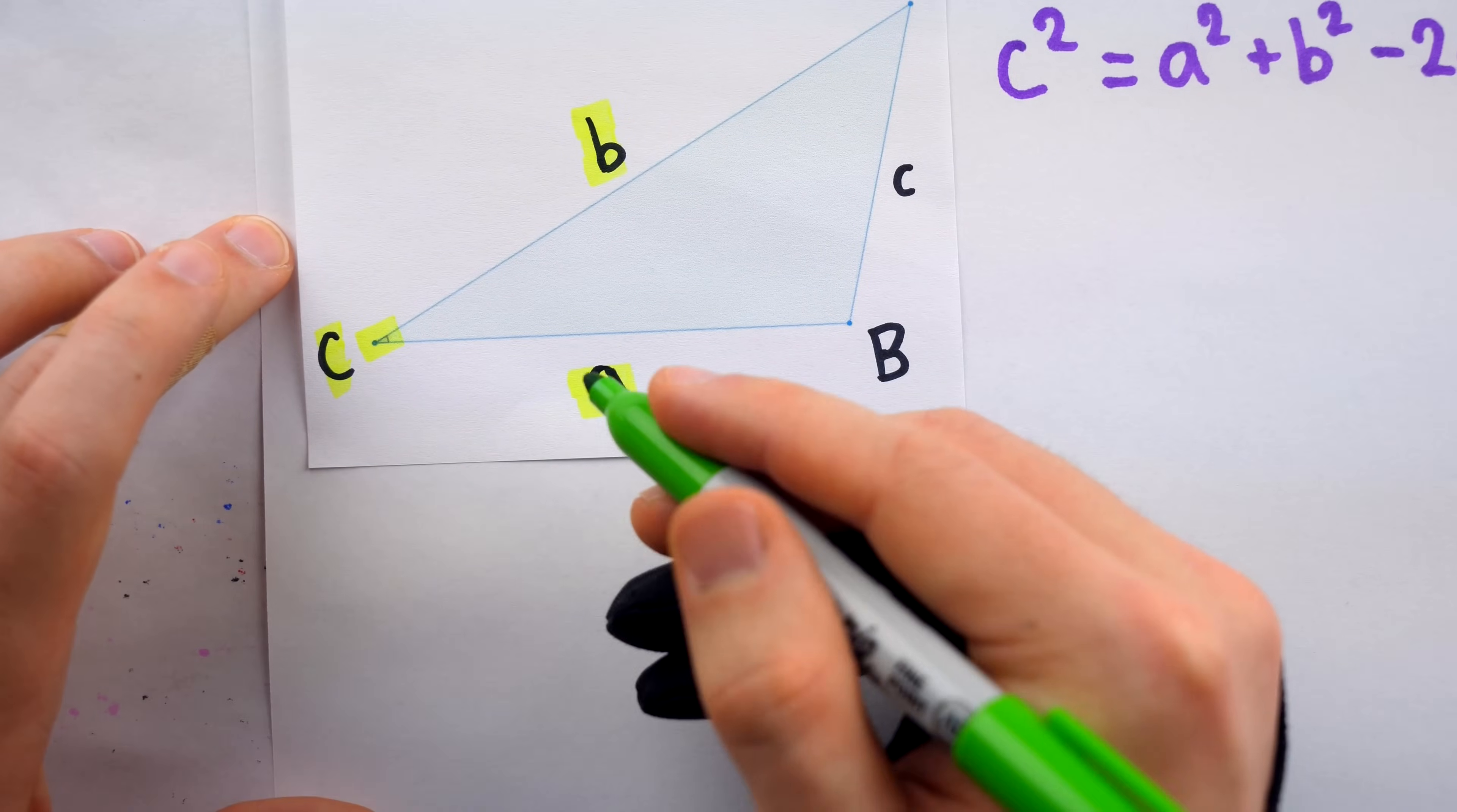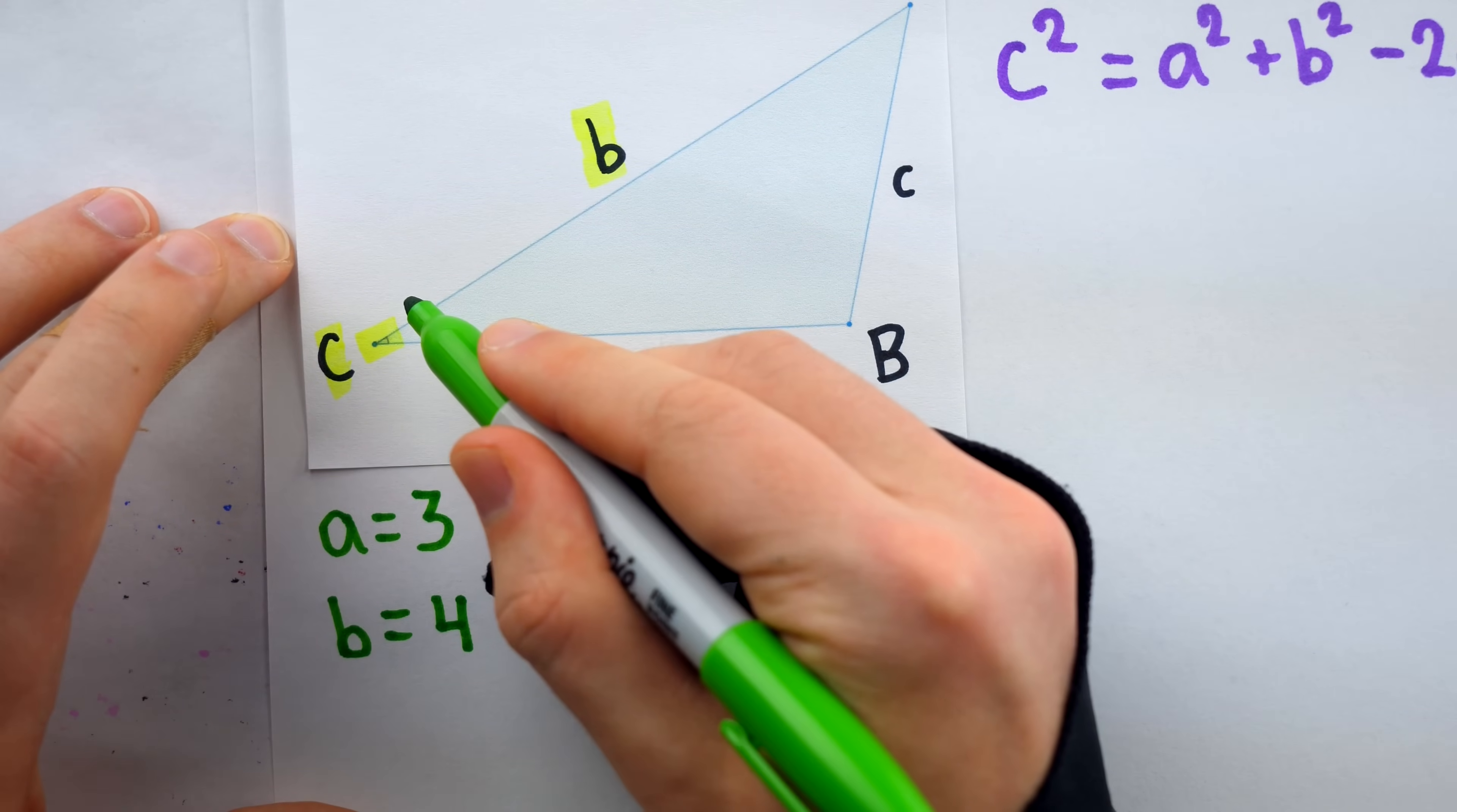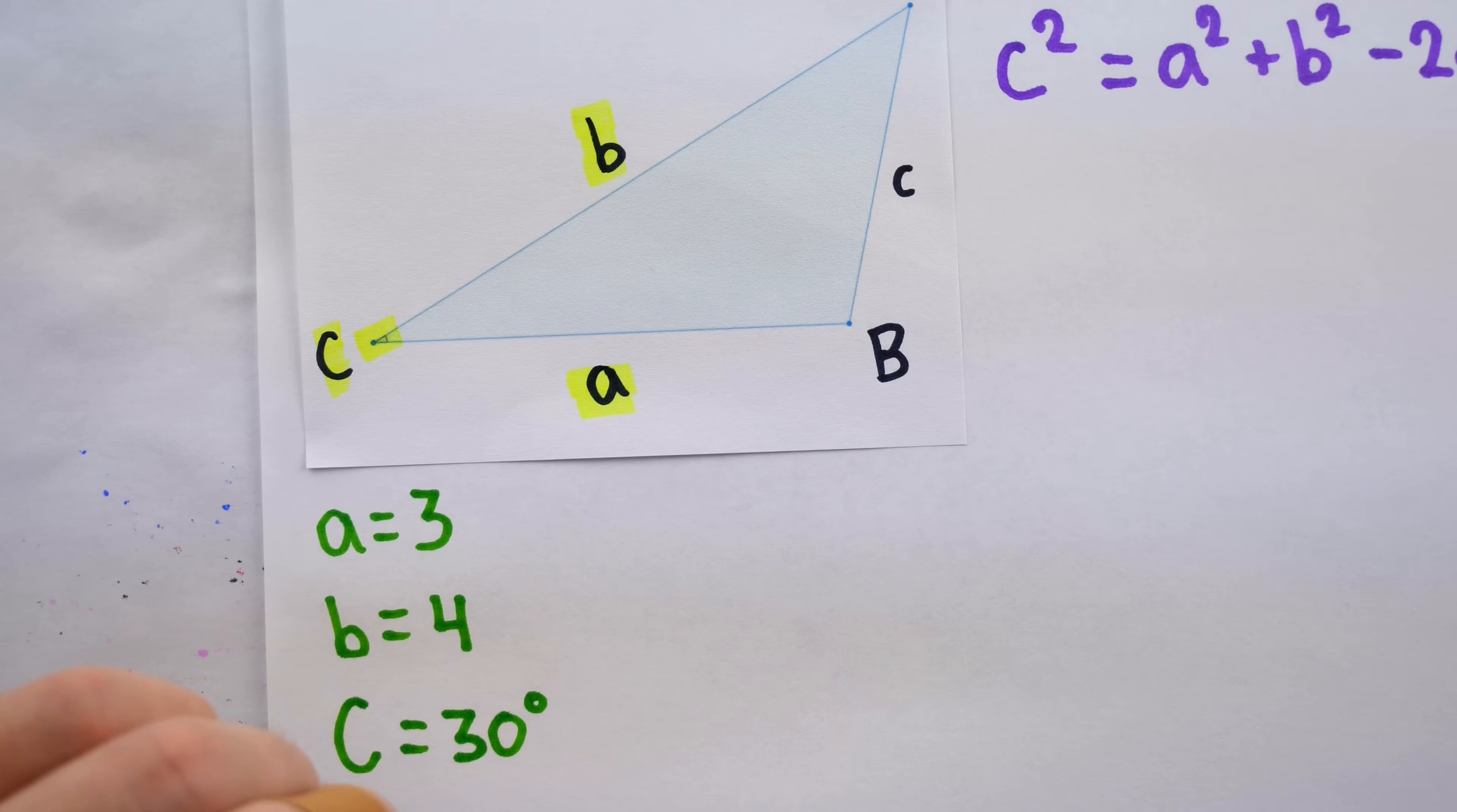This law actually looks a lot like the Pythagorean theorem. It tells us that c squared is equal to a squared plus b squared minus 2ab times the cosine of the angle between those sides a and b, which we are calling uppercase C. The history behind this law is very interesting. It wasn't written in this modern form until the 1800s, but one could argue that it was proven as far back as 300 BC.